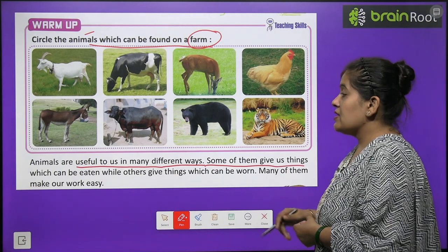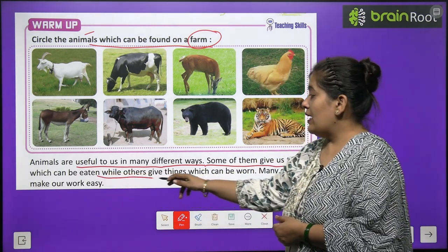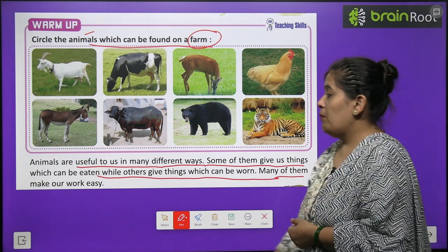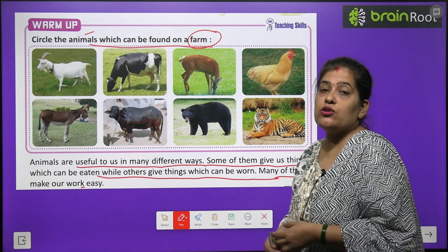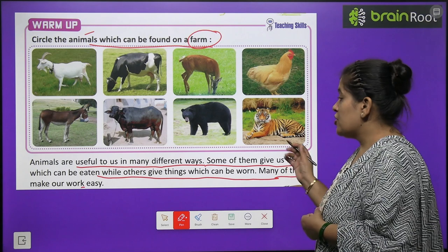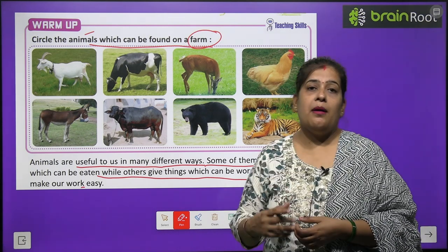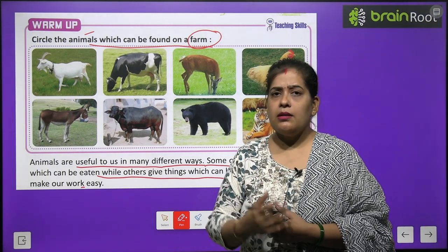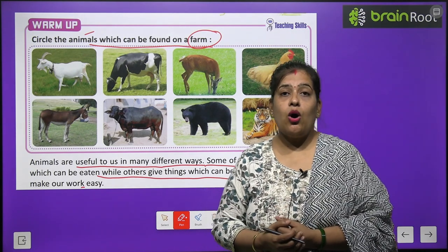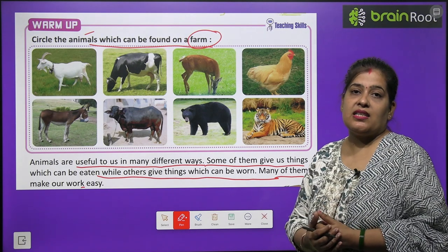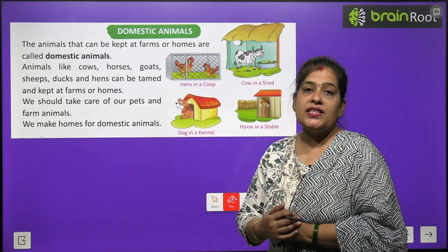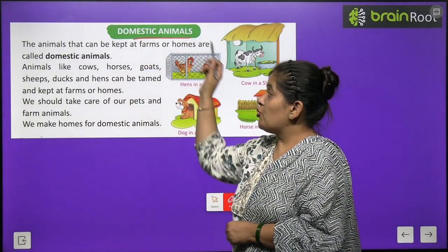Some of them give us things which can be eaten, while others give us things which can be worn. Many of them make our work easy. Kuch janvaro se hume khane ki chizein milti hai, kuch janvaro se hume pehne ki chizein milti hai, aur kuch janvar hamare kaam ko easy banate hai. Aap sab doodh peete hai — doodh hume cow aur buffalo se milta hai. Egg hume hen se milta hai.